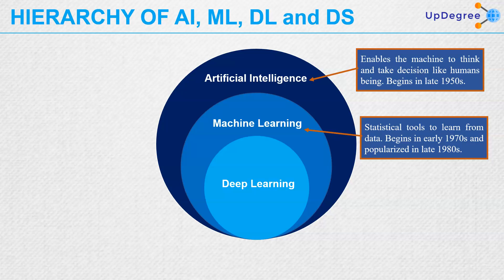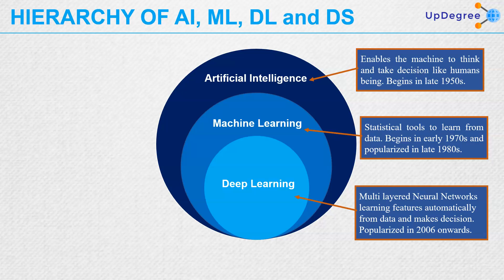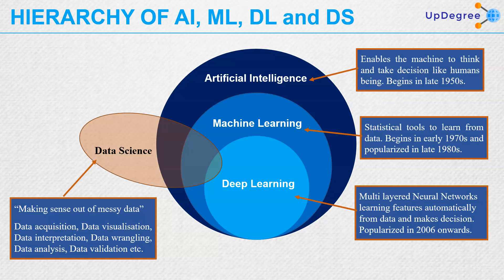Deep learning, which we can think of as even a subset of machine learning, is usually conceived as a multi-layered neural network learning features automatically from data and making decisions. It was popularized in 2006 onwards. In the present day, all the research in the field of artificial intelligence is mainly in deep learning. Data science encompasses all of these — deep learning, machine learning, and artificial intelligence.